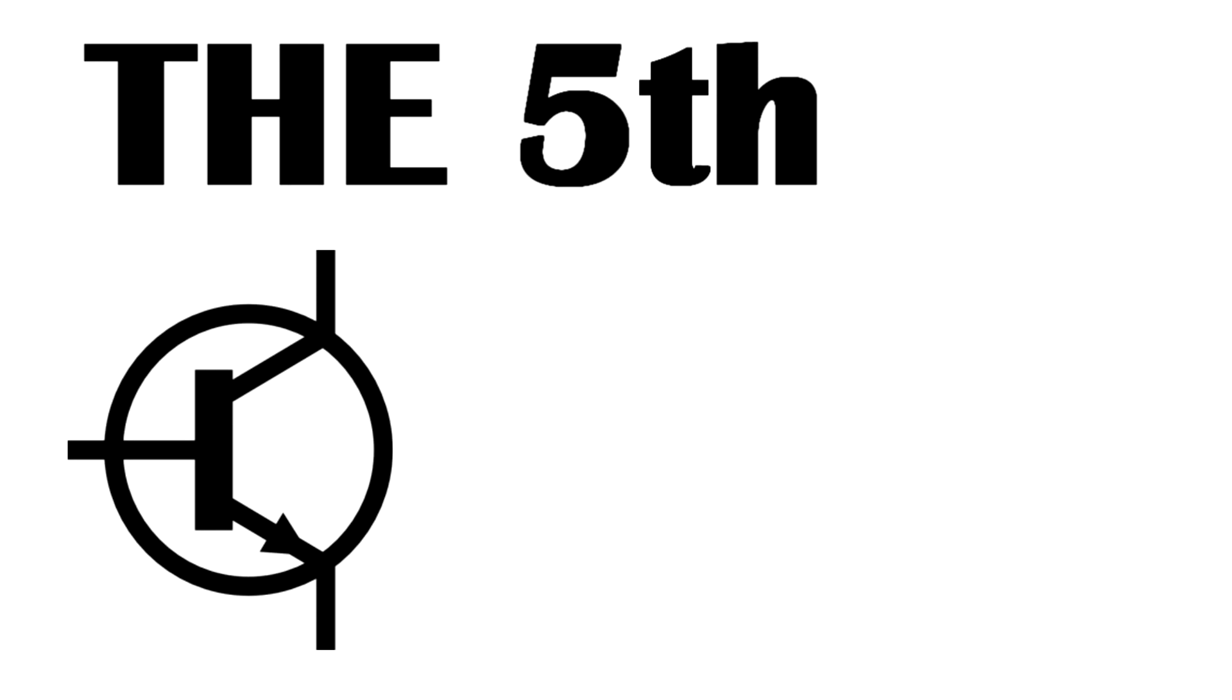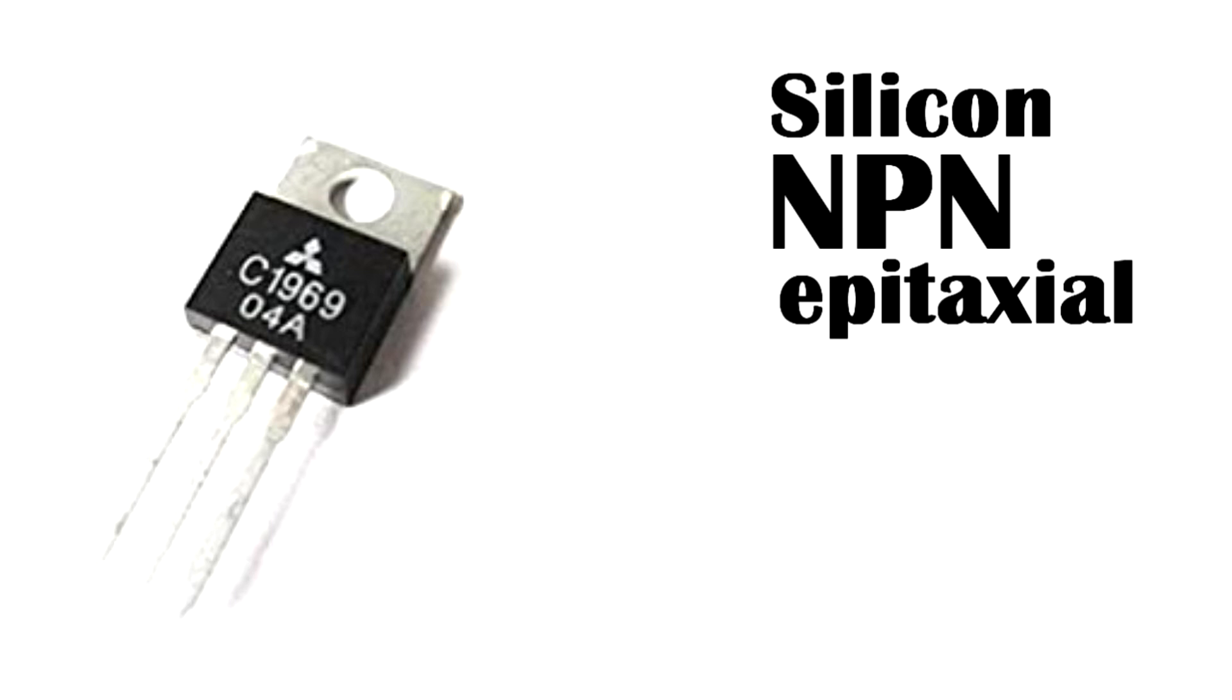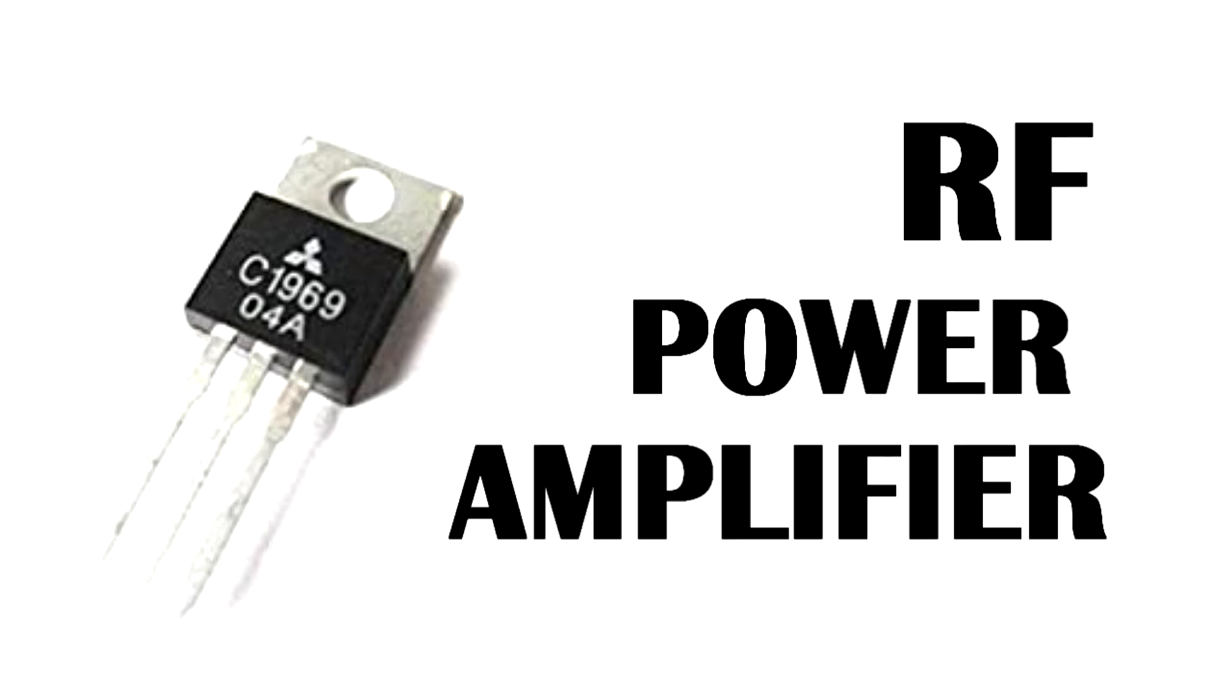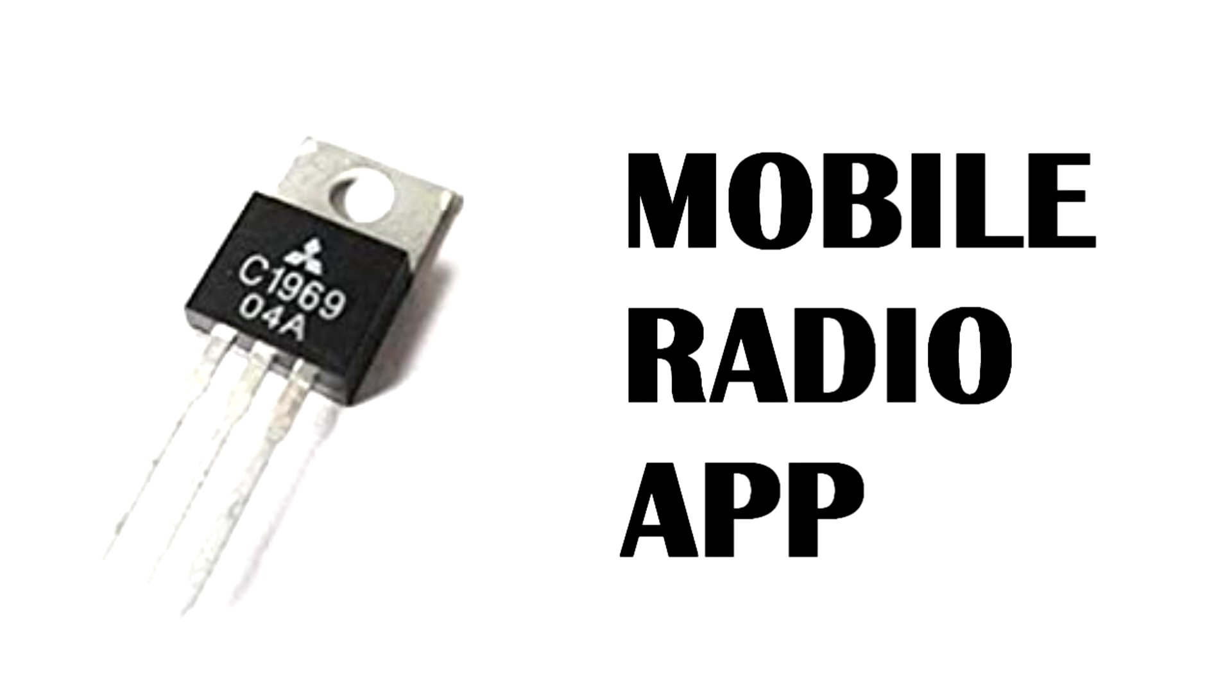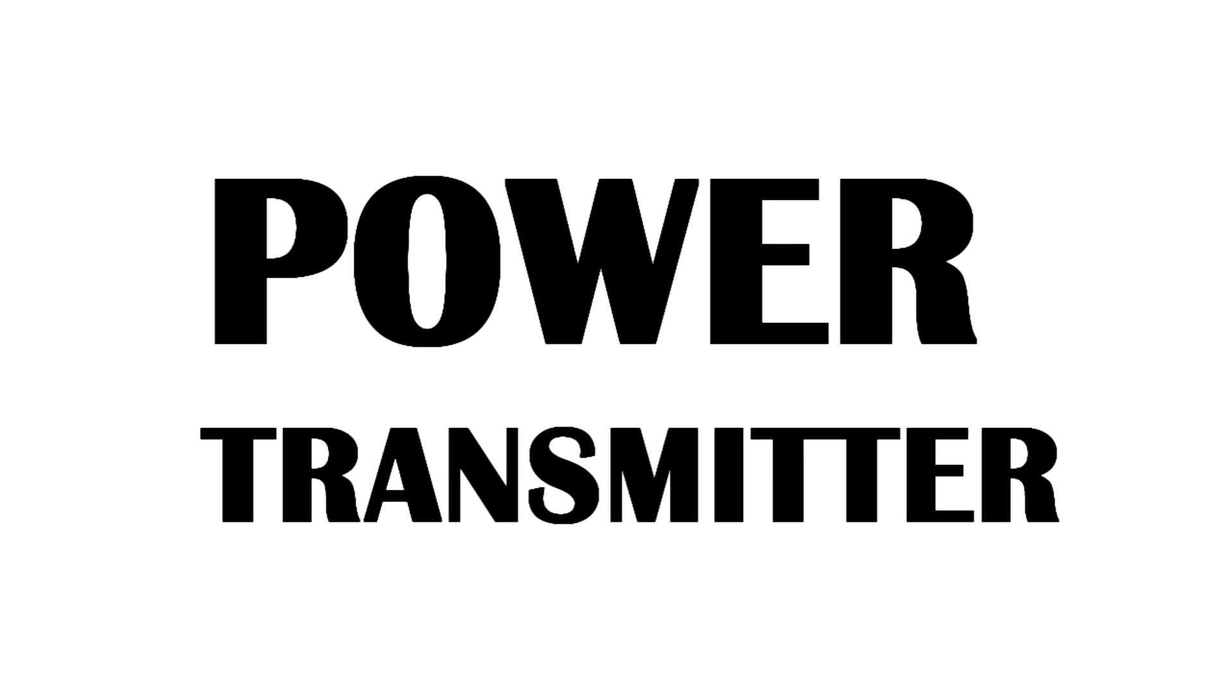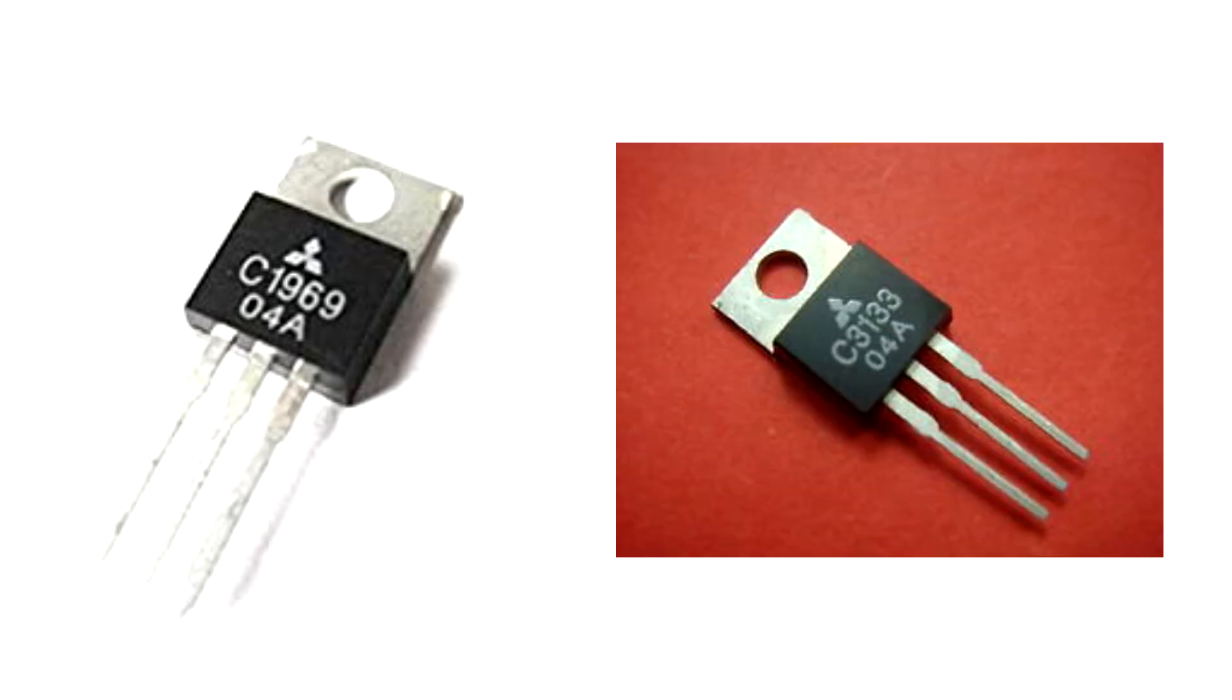The fifth transistor is 2SC1969 which is a silicon NPN epitaxial planar type transistor designed for RF power amplifier on HF band mobile radio applications. NPN silicon epitaxial planar transistor intended as a power transmitter up to UHF mobile radio application. It is available in TO220 package. It is very similar to 2SC3133 which is also a power transistor used in RF application. Even its ratings are similar to 2SC3133.